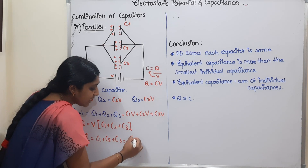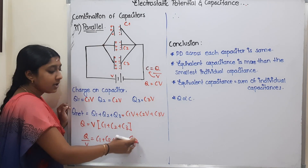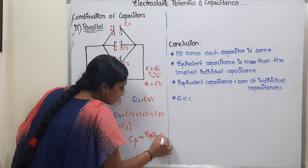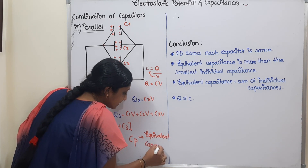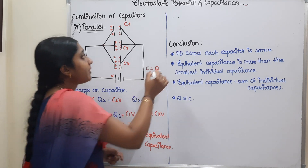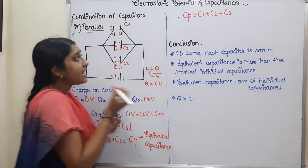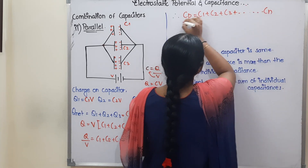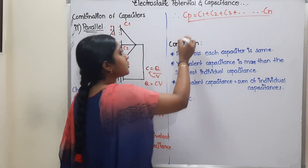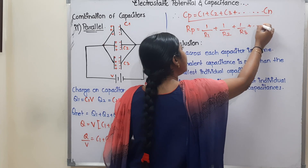Cp means capacitance in parallel. Cp is the equivalent capacitance in parallel. The final formula for capacitors in parallel is: Cp = C1 + C2 + C3.